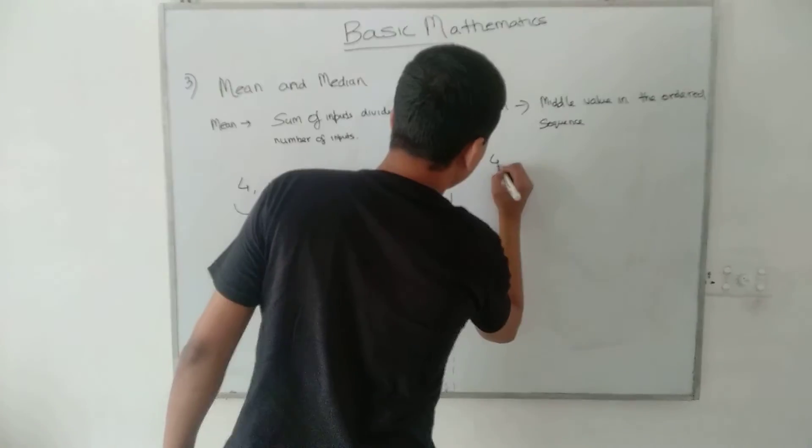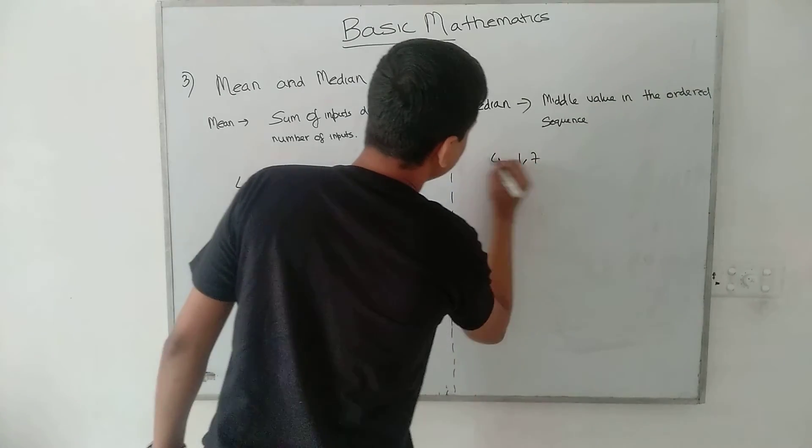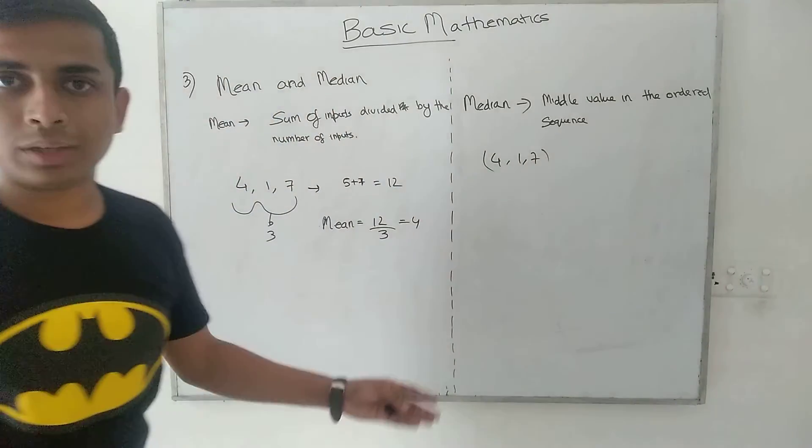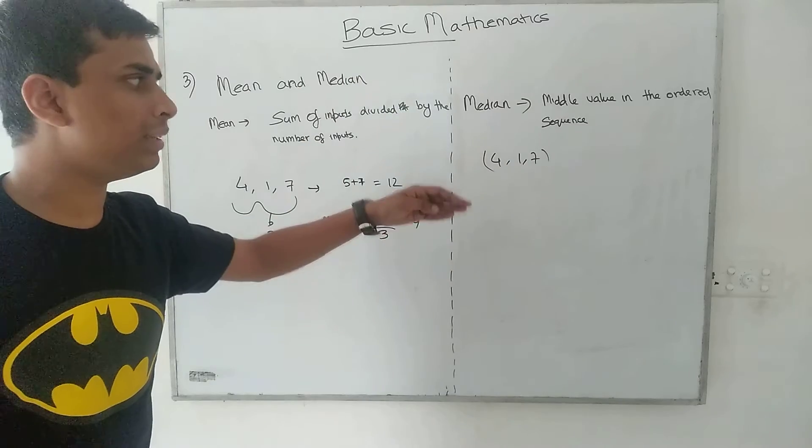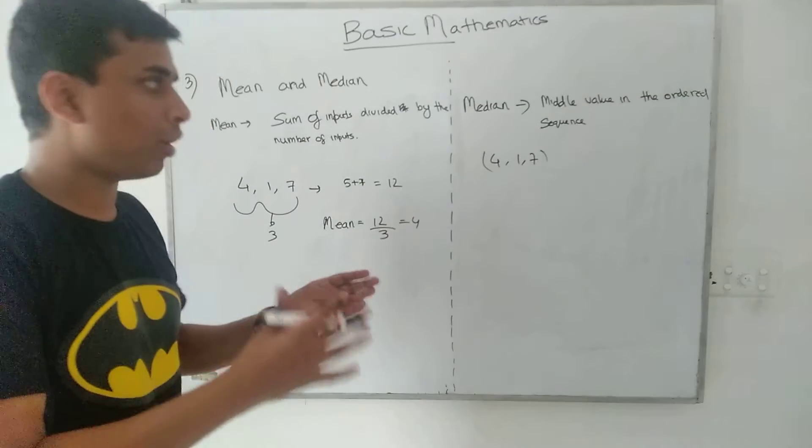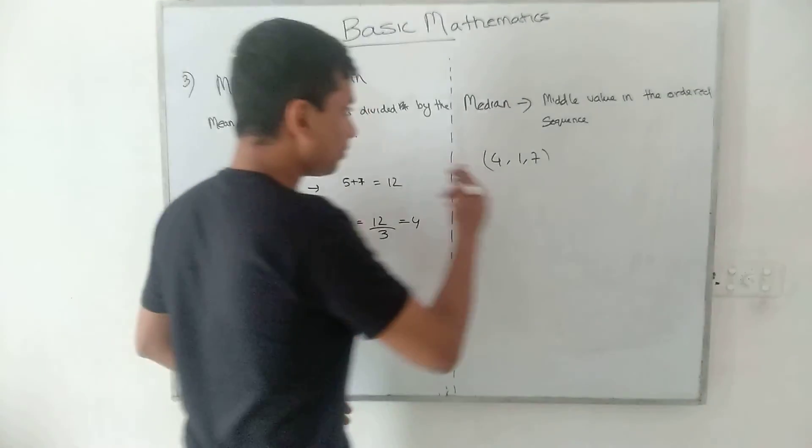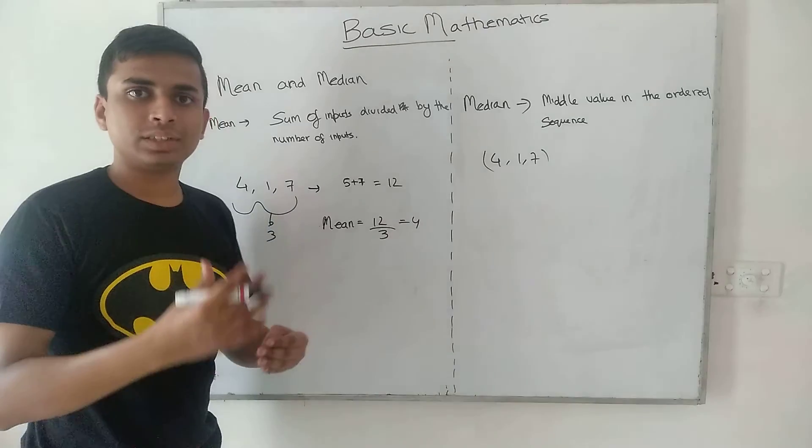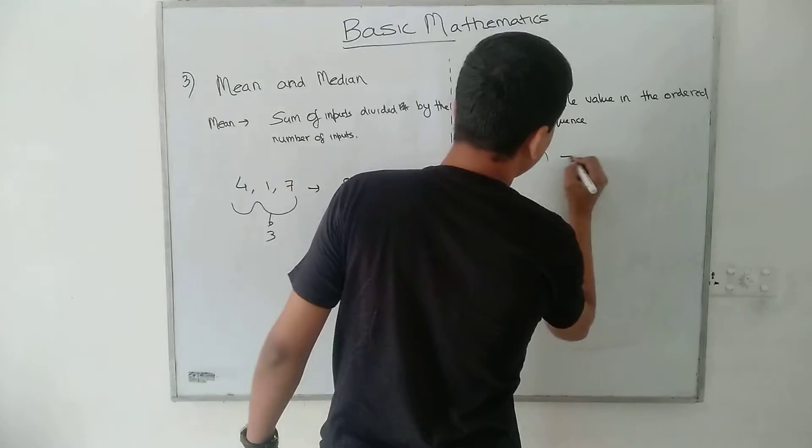What is exactly meant by the ordered sequence? Ordered sequence usually means that if you are provided a sequence of numbers, suppose 4, 1, and 7, it is present in an unordered manner. So we must first sort it.